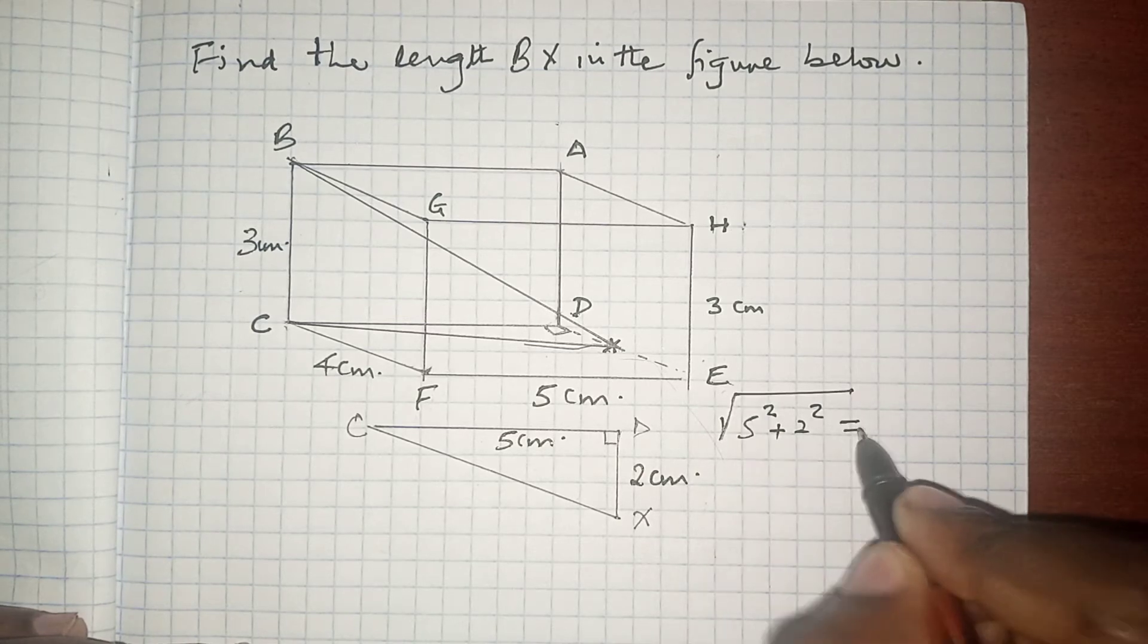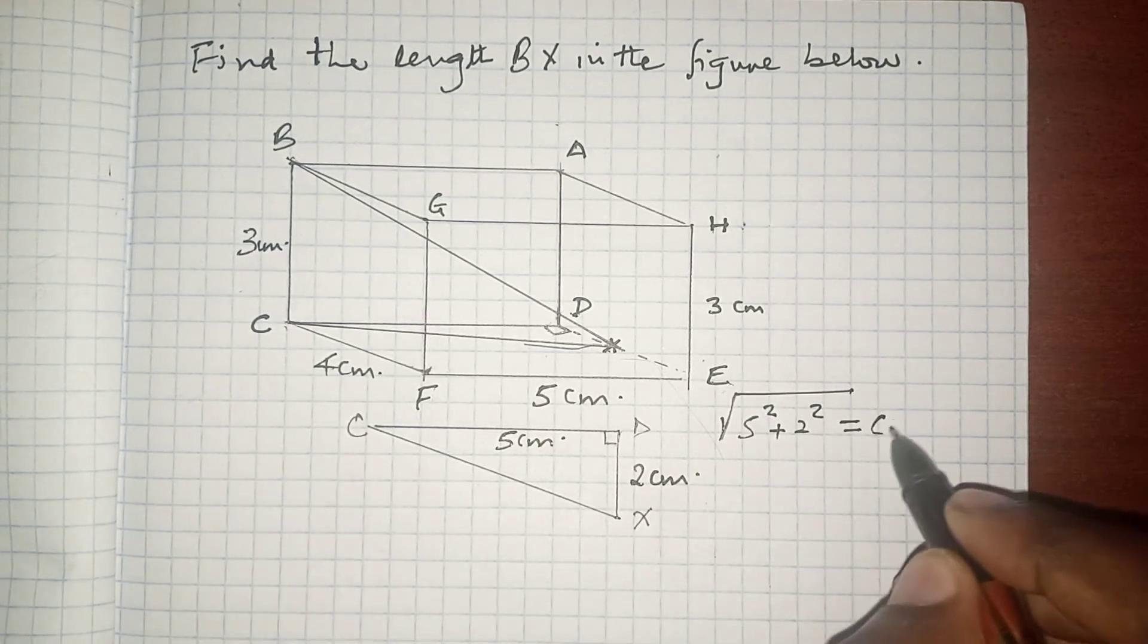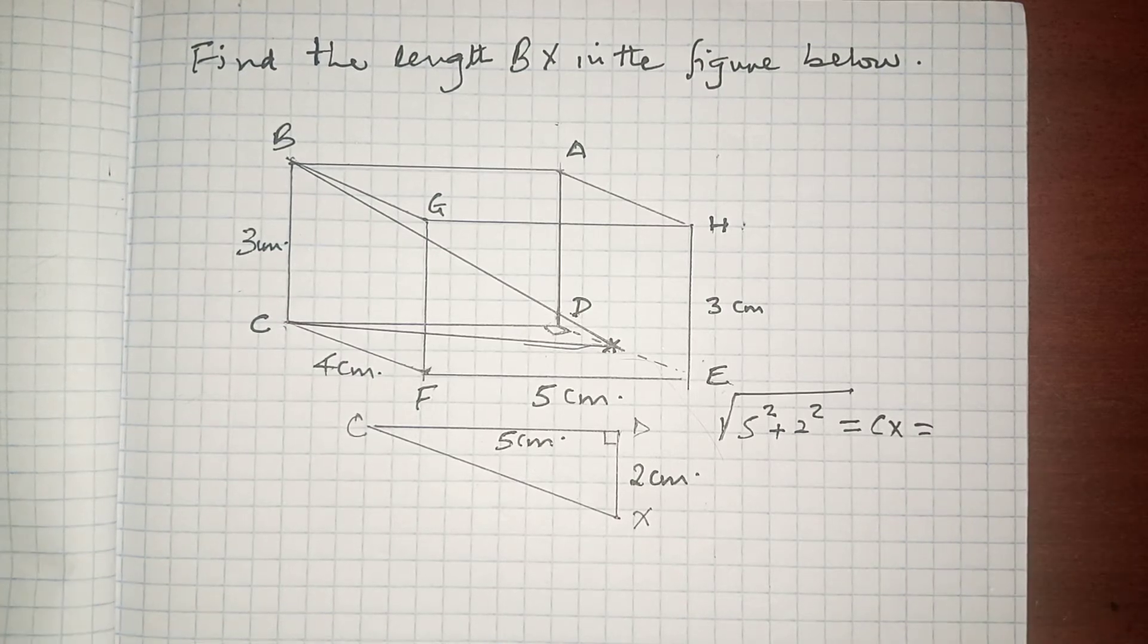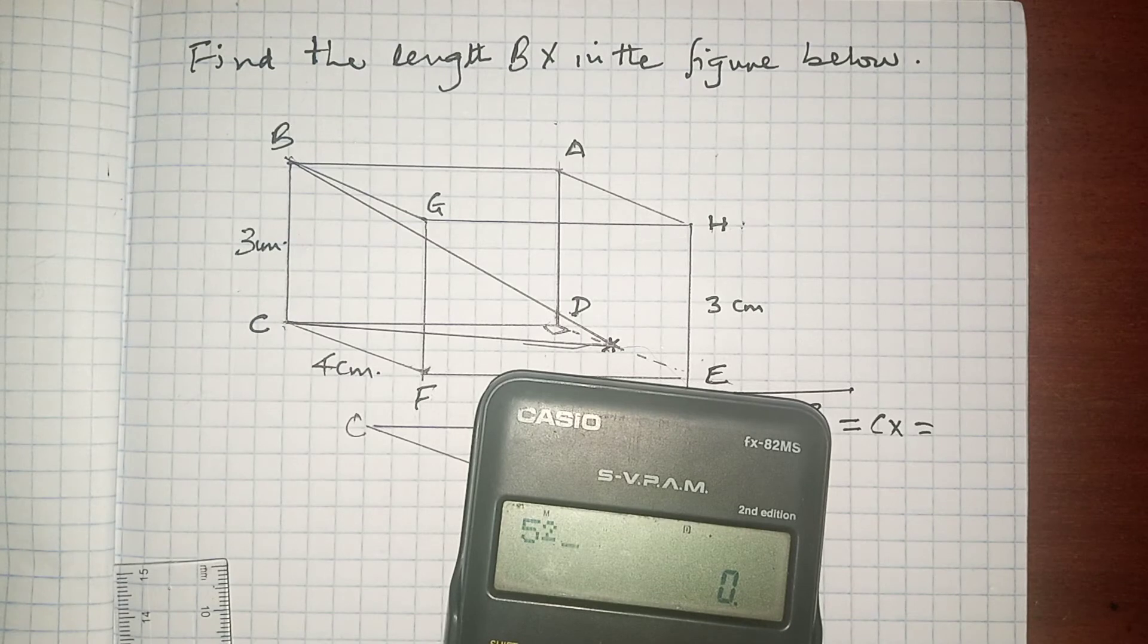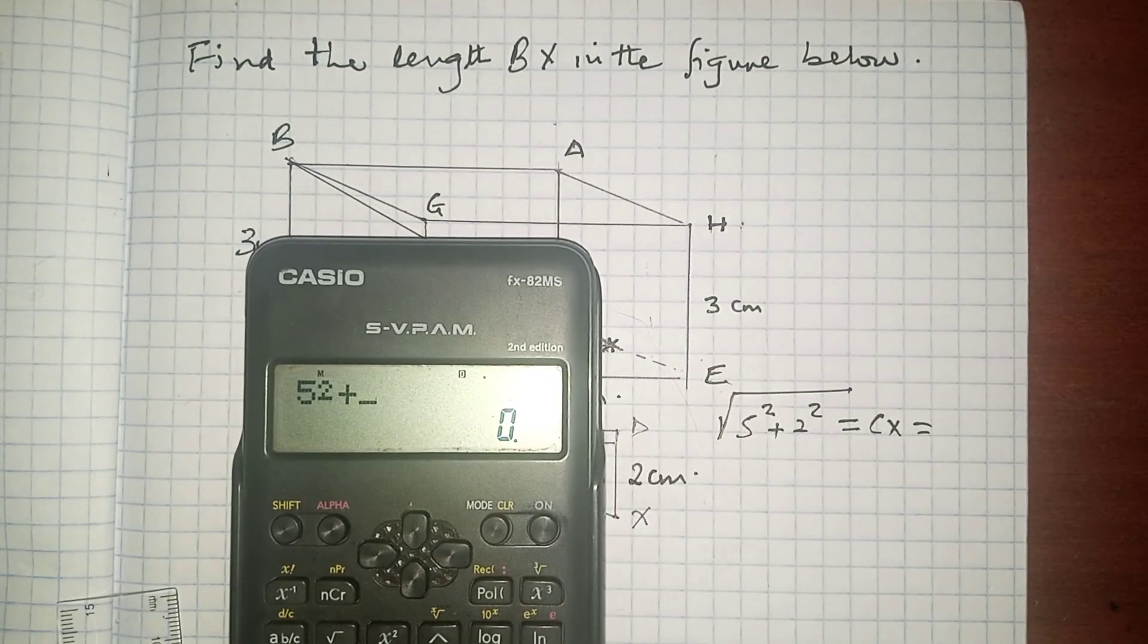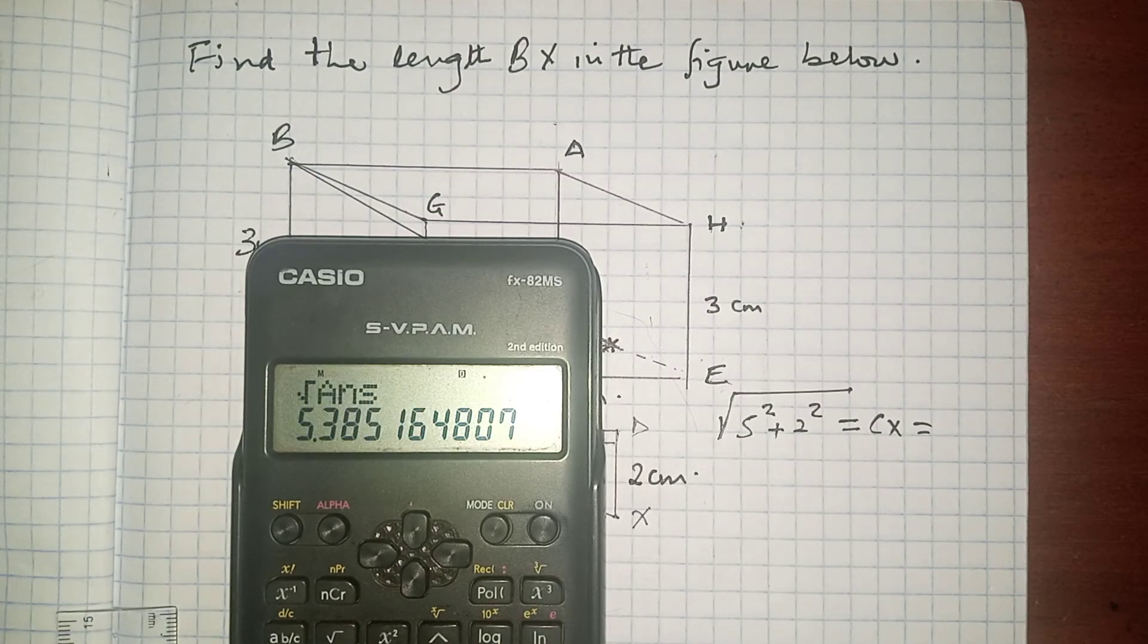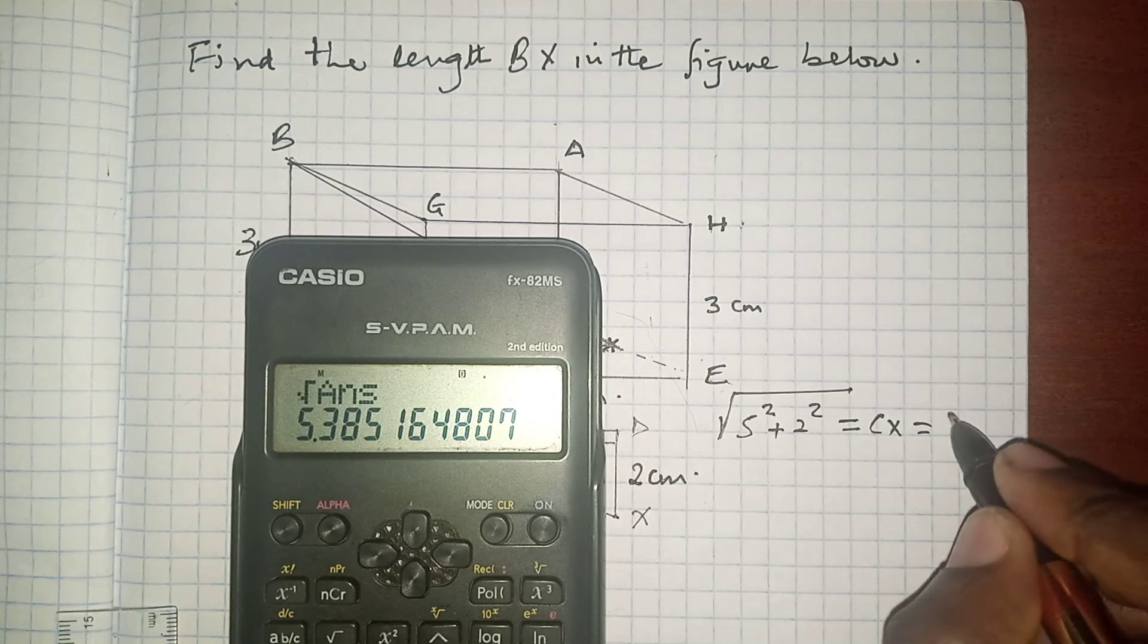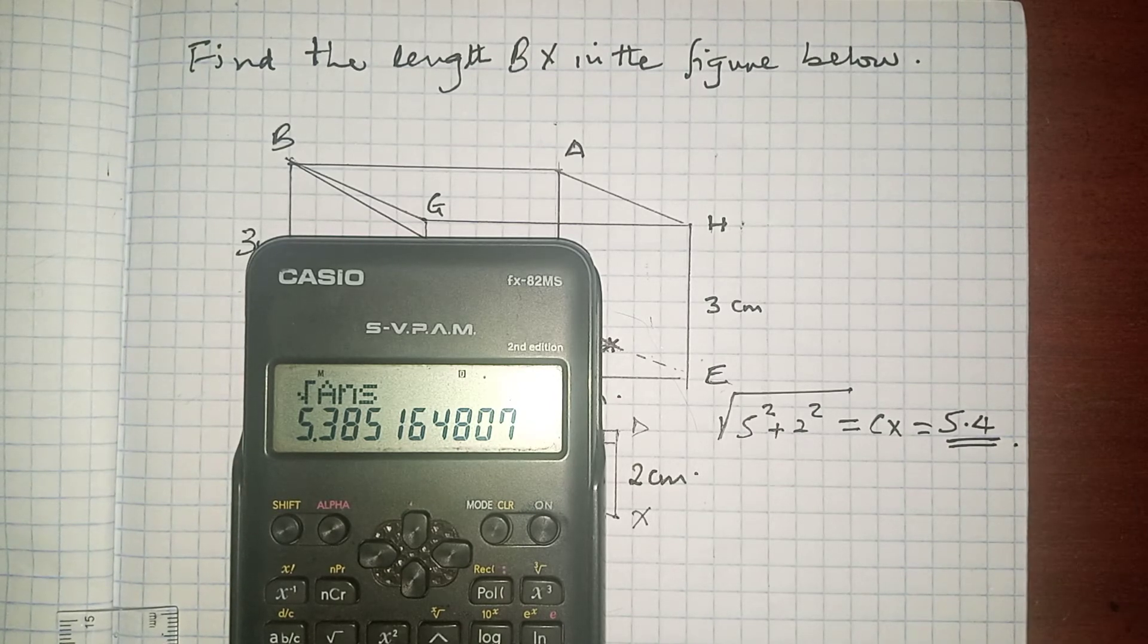The square root of that is what is going to give us CX. Let's calculate that: 5 squared plus 2 squared is 29. The root of 29 is 5.38, which is 5.4 to 1 decimal place.